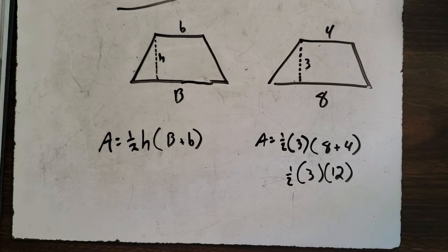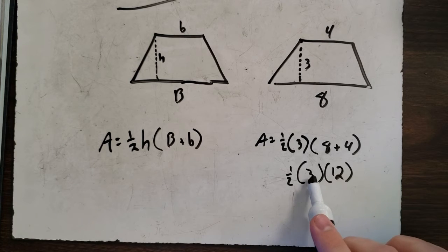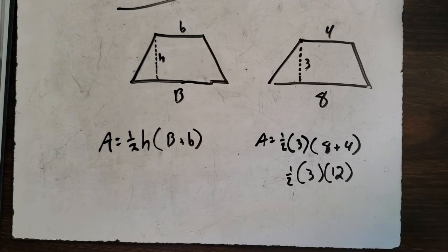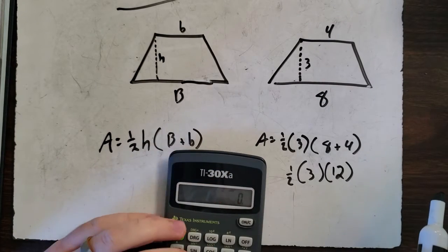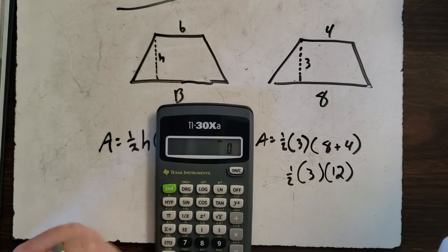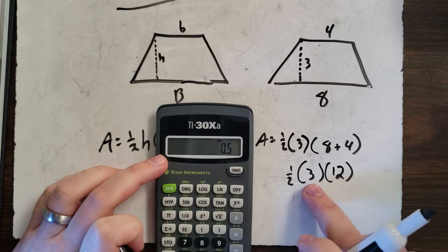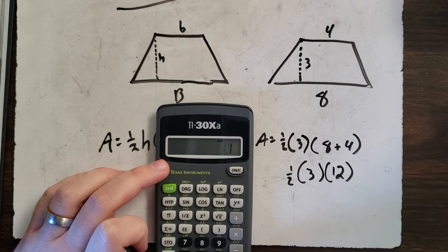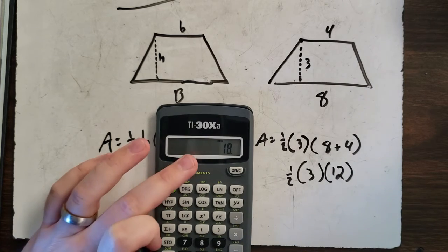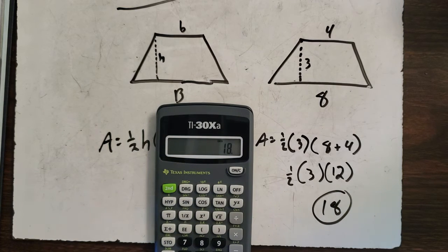Now you can do several things here. What I would do, you can put it in your calculator. One-half, remember, is 0.5 times three times 12, and that equals 18.